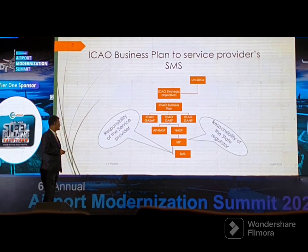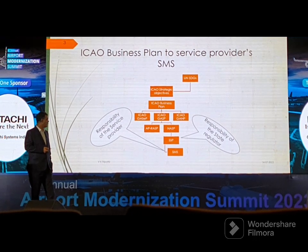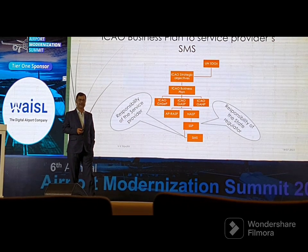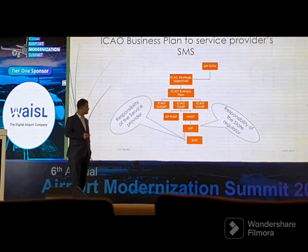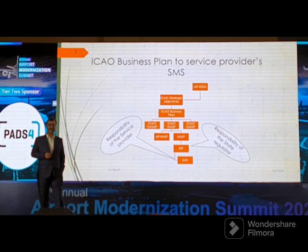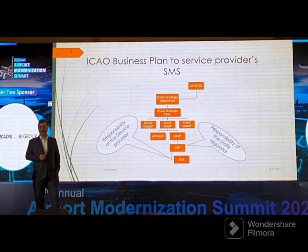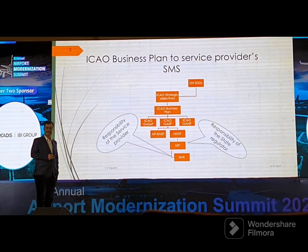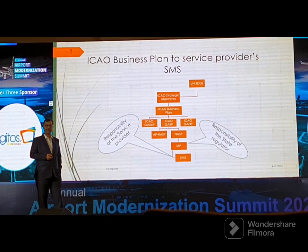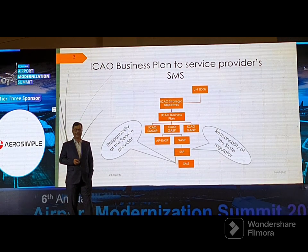After the Asia Pacific level, you have the National Aviation Safety Plan — in India's case this is the responsibility of the regulator, the DGCA, the Directorate General of Civil Aviation, and it is prepared at the state level. Finally it comes to the operator: the airport operator, air traffic service provider, maintenance organizations, or airlines. There are seven or eight organizations that must implement this through their Safety Management System.